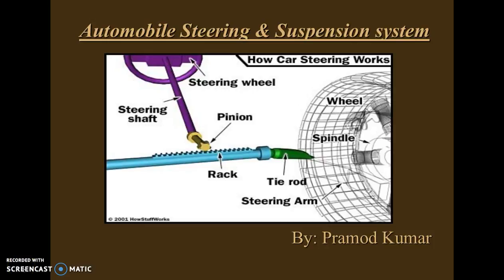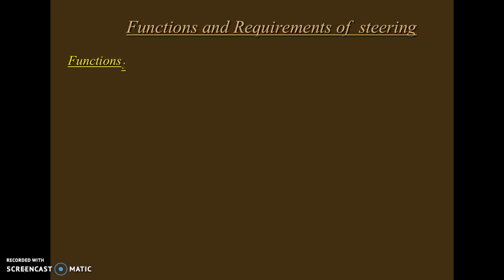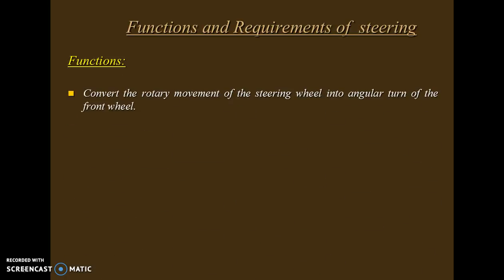Good afternoon. We are discussing the automobile steering and suspension system. Automobile steering and suspension systems are the basic control systems of an automobile. The steering system and brake system are the controlling devices of an automobile.